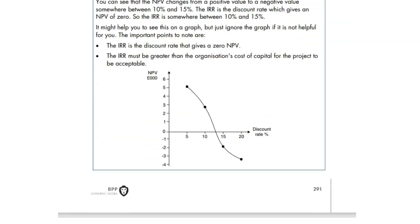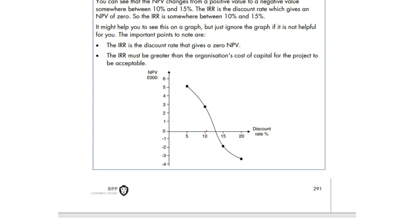There's a graph they're showing you here. Look at this. At 5 and 10, it is positive. At 15 and 20, it is negative. So it must be in between somewhere. Look at this. Up to 10, 11, 12. More than 12, but less than 14, obviously, which should be your IRR.